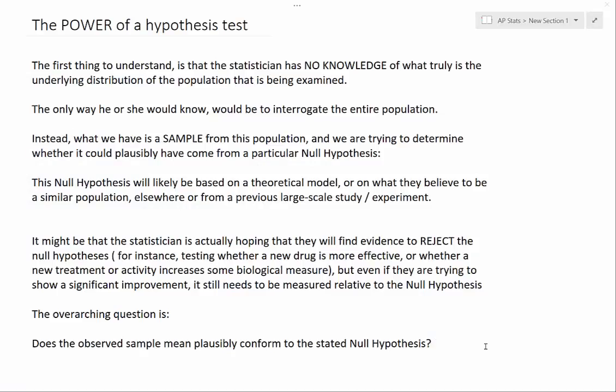Hello. A lot of students have some difficulty in understanding precisely what's going on when they're talking about the power of a hypothesis test and how it relates to type 2 errors. The first thing to understand is that the statistician has no knowledge of what truly is the underlying distribution of the population being examined. What we have instead is a sample, and we're trying to determine whether it could plausibly have come from a particular null hypothesis.